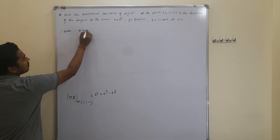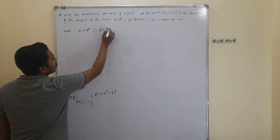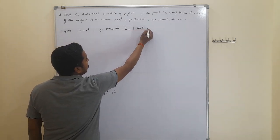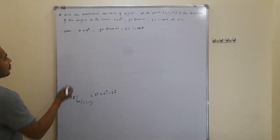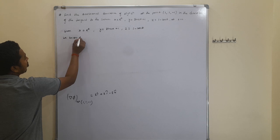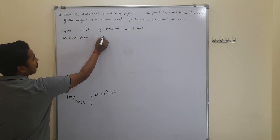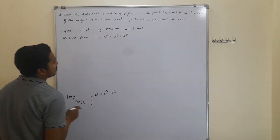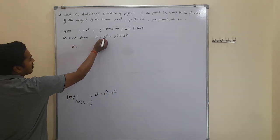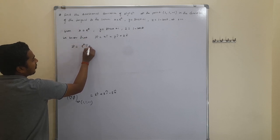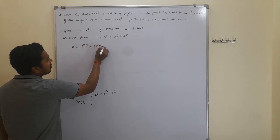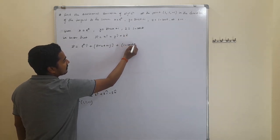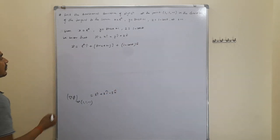For the second part, we have the curve x = e^t, y = sin(2t) + 1, z = 1 - cos(t). The position vector is r⃗ = x î + y ĵ + z k̂, which gives r⃗ = e^t î + (sin(2t) + 1) ĵ + (1 - cos(t)) k̂.